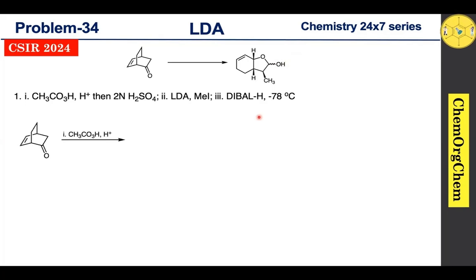The first reaction condition is peroxyacetic acid. Peroxyacetic acid can promote two kinds of reactions: epoxidation and Baeyer-Villiger oxidation. The selectivity depends on the conditions used, but under this condition, Baeyer-Villiger oxidation predominates. According to Baeyer-Villiger oxidation, there is oxidative cleavage of the carbon-carbon bond adjacent to the carbonyl.